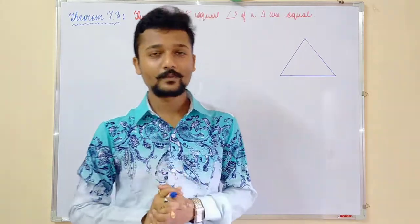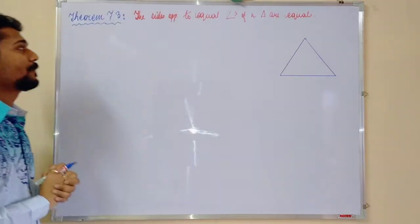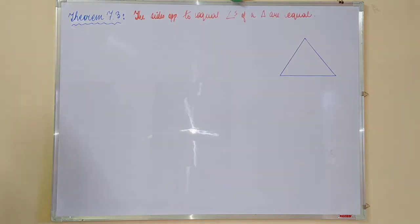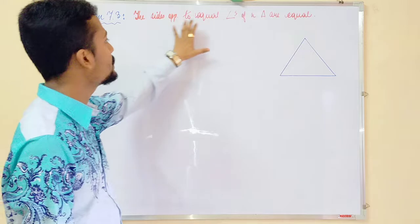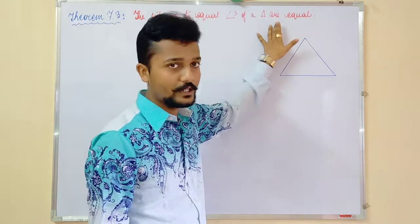Hello everyone, now we are going to see another theorem from your chapter 7 of class 9 syllabus, theorem 7.3. The sides opposite to equal angles of a triangle are equal.